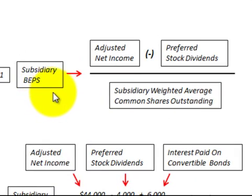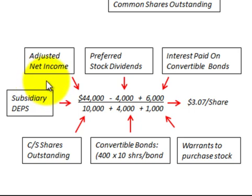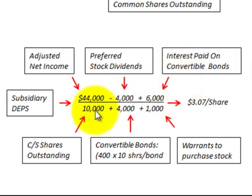Now let's apply the formula for the subsidiary's diluted earnings per share through a calculation. You need to be very familiar with dilutions, earnings per share, warrants, and preferred stock to use these formulas. For the subsidiary's diluted EPS, we start with adjusted net income of $44,000, subtract preferred stock dividends of $4,000, and add interest paid on convertible bonds of $6,000.